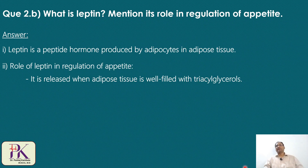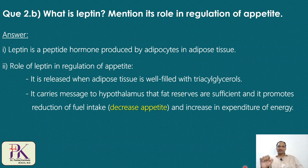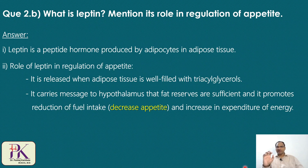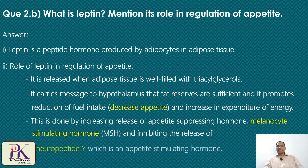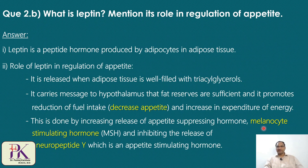Leptin is released when adipose tissue is full of triacylglycerol. It carries a message to the hypothalamus — mainly the arcuate nucleus — which is involved in regulation of appetite. It carries the message that fat reserves are sufficient, promoting reduction of fuel intake, i.e., decreased appetite, and it increases energy expenditure. It does this by increasing the release of the appetite-suppressing hormone melanocyte-stimulating hormone (MSH) and inhibiting the release of neuropeptide Y, which is an appetite-stimulating hormone.